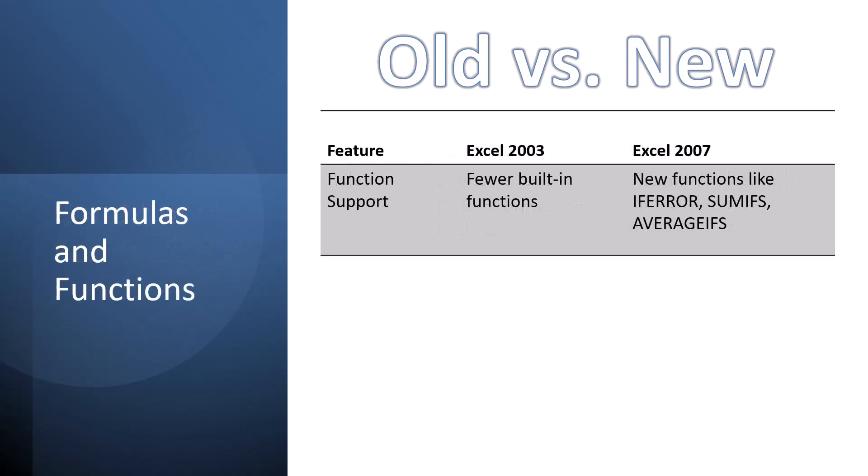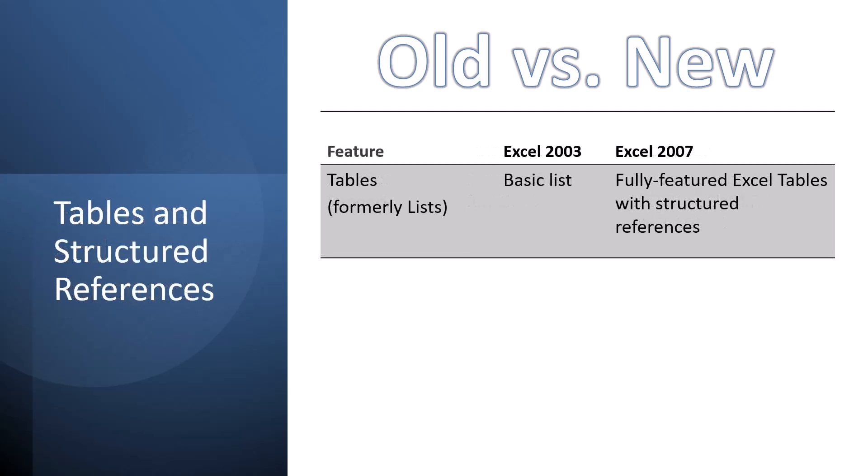When it comes to formulas and functions, there were much fewer built-in functions in 2003 and earlier than in 2007 forward. There are dozens of new functions, especially when you take into account the new dynamic array functions introduced around 2020. For tables, 2003 and earlier only supported basic lists, but in 2007 forward we have fully featured Excel tables that use structured references, managed color schemes, and a plethora of other features that everybody should take advantage of.